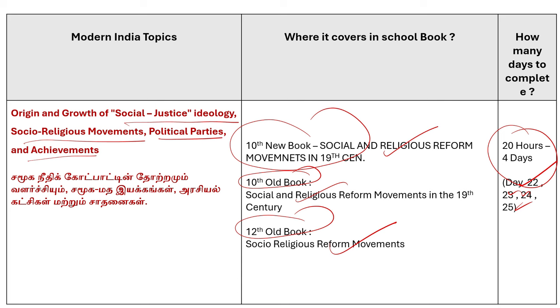Modern India — 40 marks. We can minimize and do good scores. We can do it.